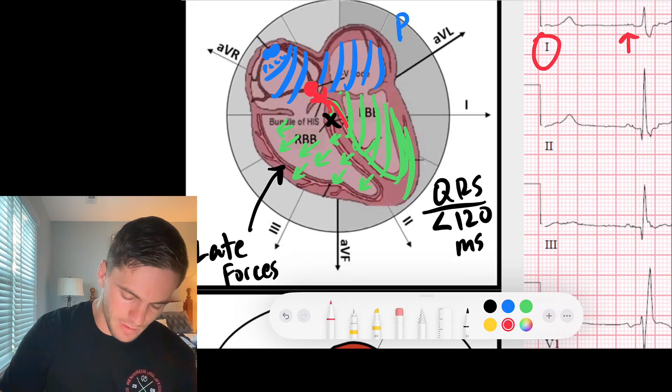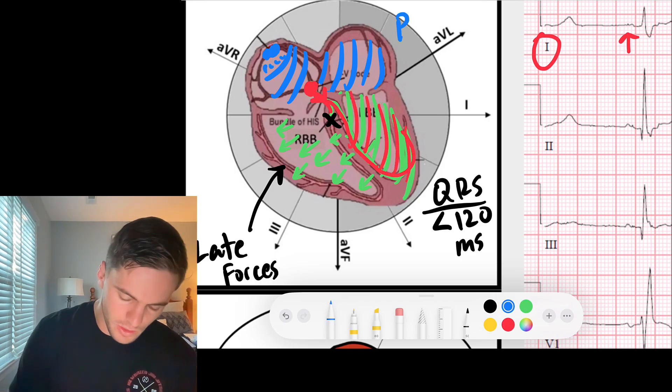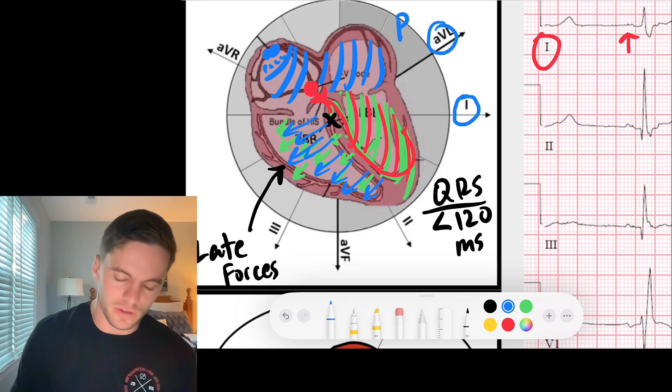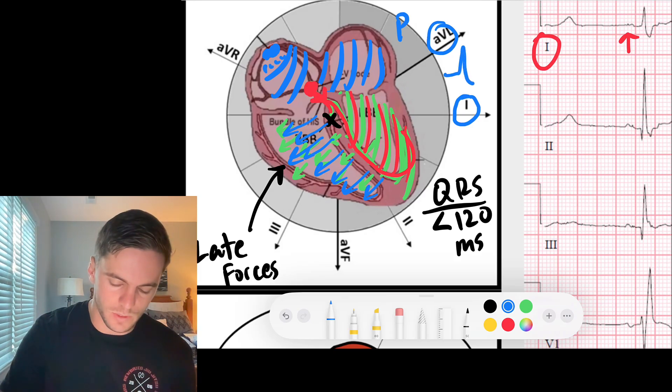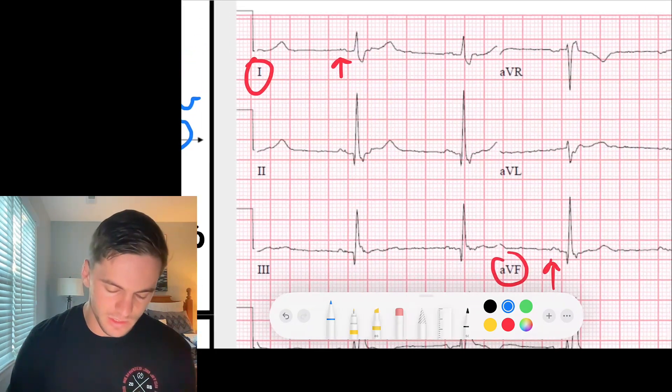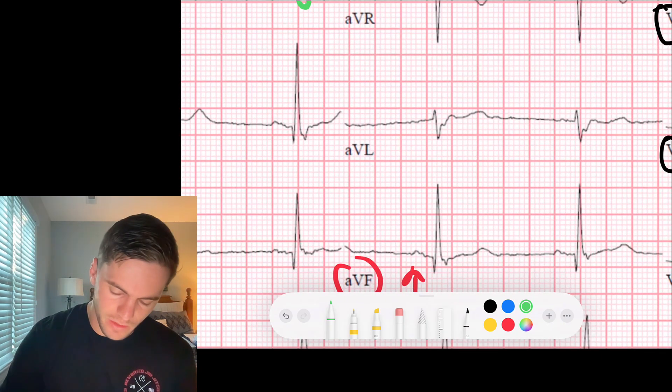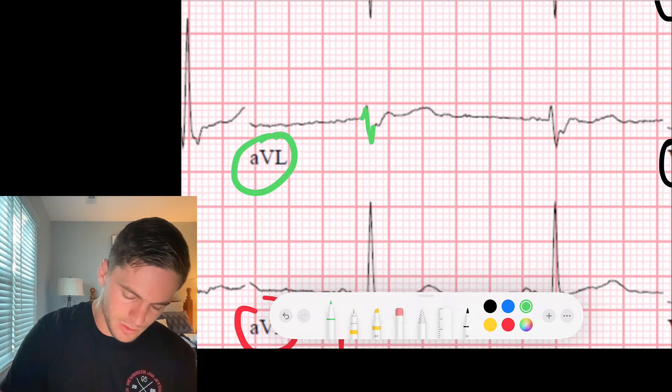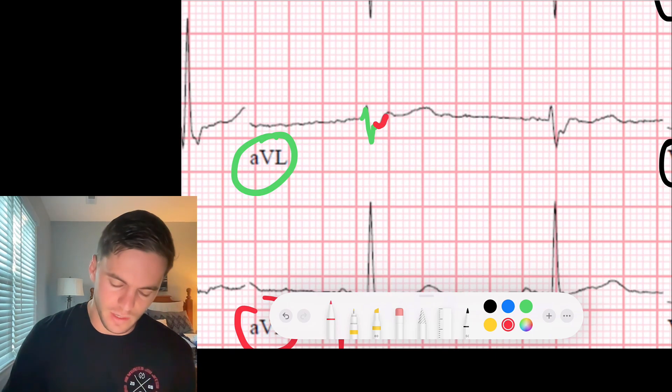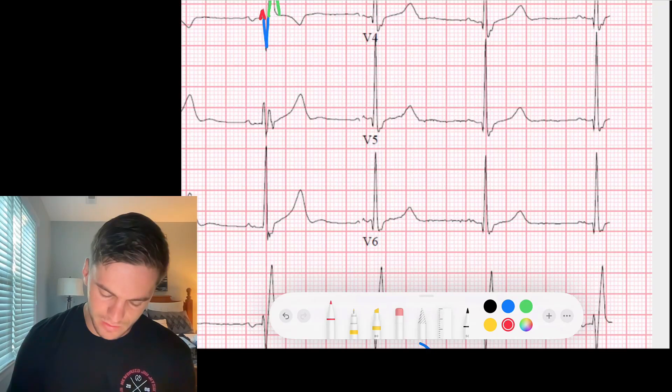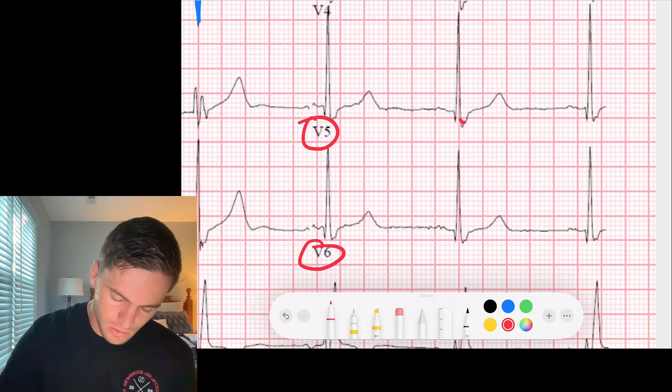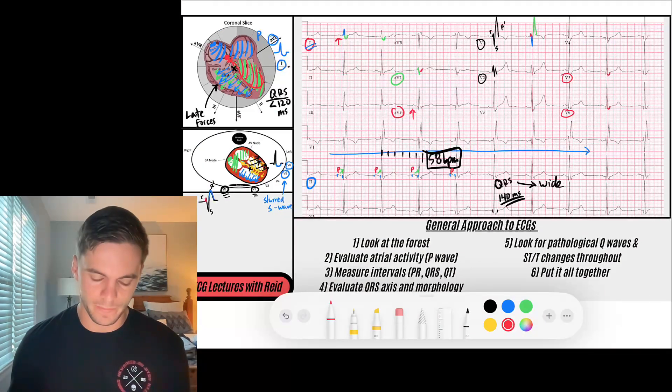What you're also going to see slurred S waves is if I go to my limb leads. We've got rapid conduction down the left bundle, fast conduction down the left bundle, and then we get slow gap junction to gap junction towards the right ventricle. So where else should I see slurred S waves? Well, these forces are going away from lead 1 and lead AVL. So we're also going to see those same types of slurred S waves in lead 1 and AVL. And that's the right bundle branch block.